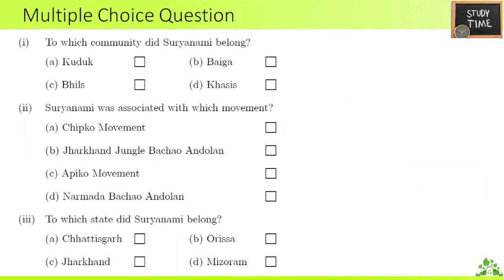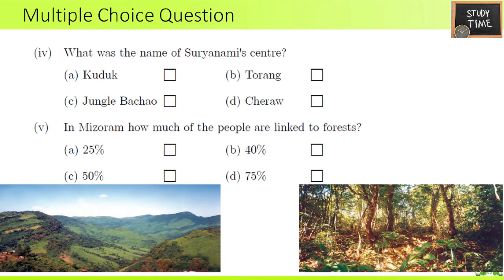Multiple choice questions: First — to which community did Suryamani belong? She belonged to Kuduk. Second — Suryamani was associated with which movement? Jharkhand Jungle Bachao Andolan. Third — to which state did Suryamani belong? She belonged to Jharkhand. Fourth — what was the name of Suryamani's center? It is Tvarang. Fifth — in Mizoram, how much of the people are linked to forest?